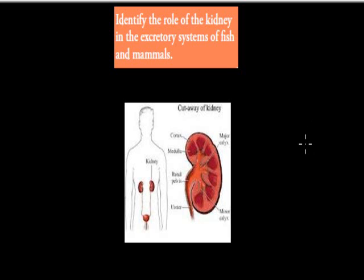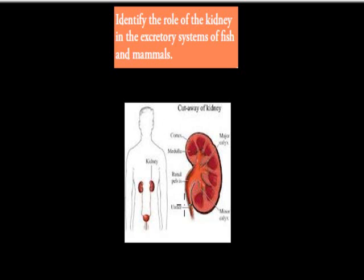Welcome back. In the last video we talked about why we need to get rid of waste products. In this video we're going to talk about some of the actual organs that help us get rid of those waste products. The dot point says: identify the role of kidneys in the excretory system of fish and mammals.